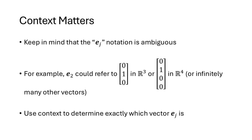This notation is a little bit ambiguous because if I just say e2, I could be referring to the vector (0,1,0) in R3, but I could also be referring to the vector (0,1,0,0) in R4, or infinitely many other vectors. So we're going to have to use context to understand what the e notation means.